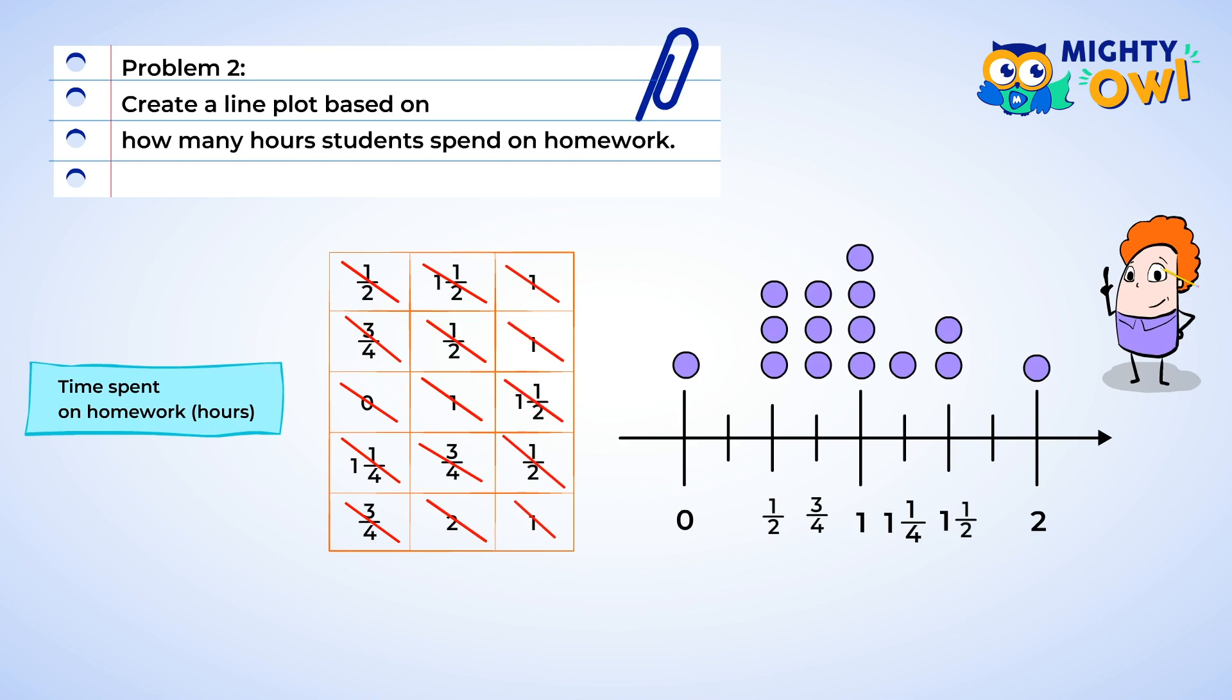Woohoo! What a great job creating the line plot! Now we can understand those numbers better. Let's look at where most of the dots are located. So we can see that most people work on homework for between a half hour and an hour. Now let's look at another line plot before we run out of time.